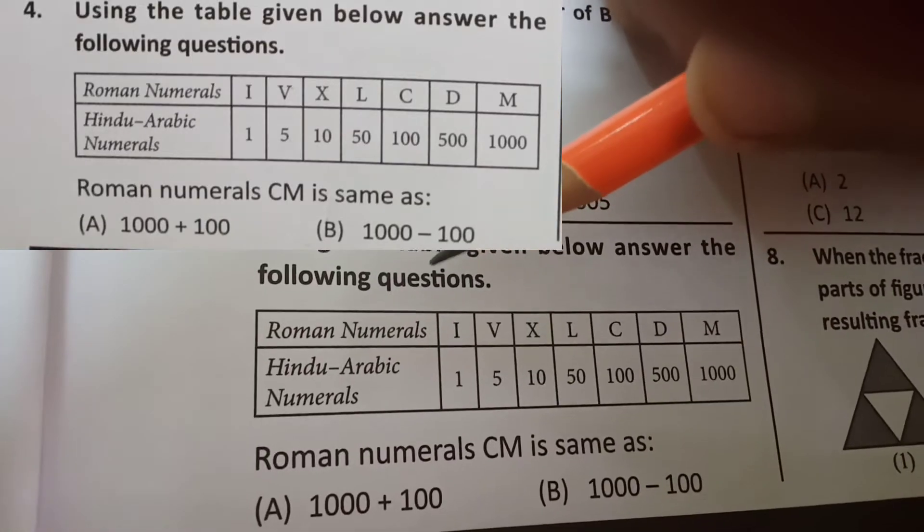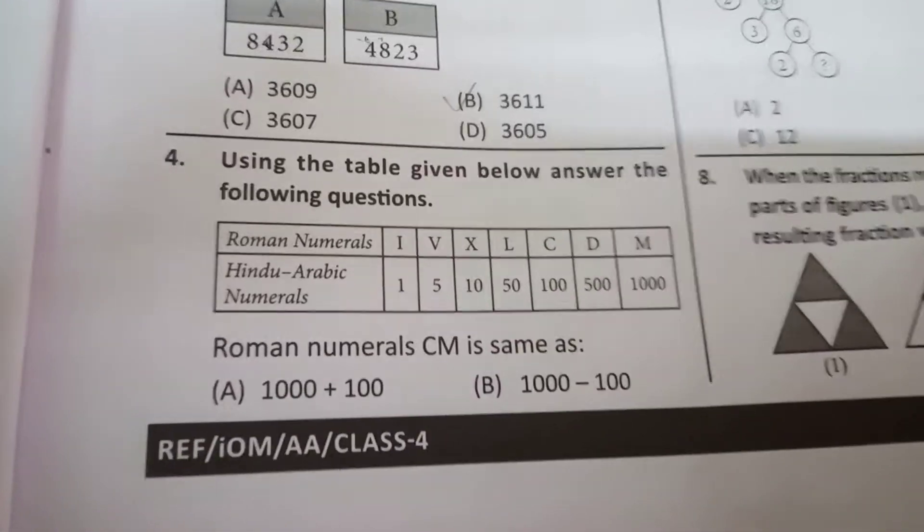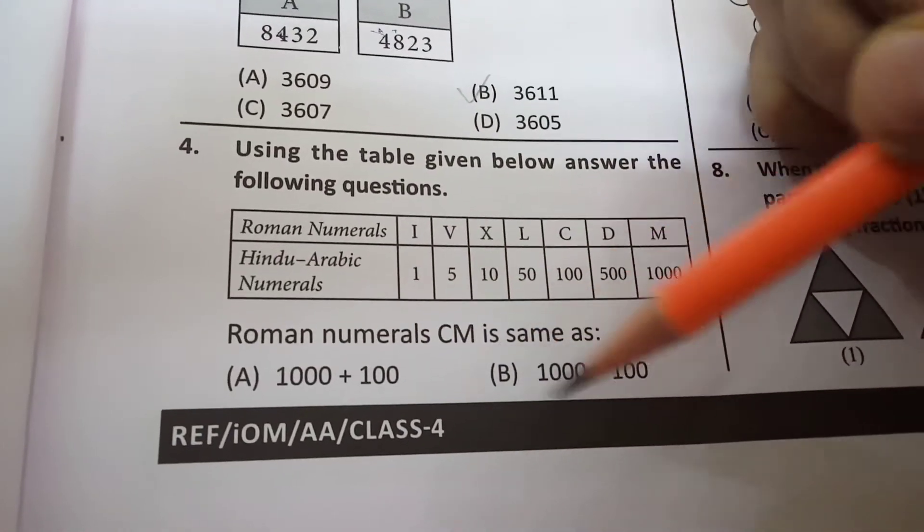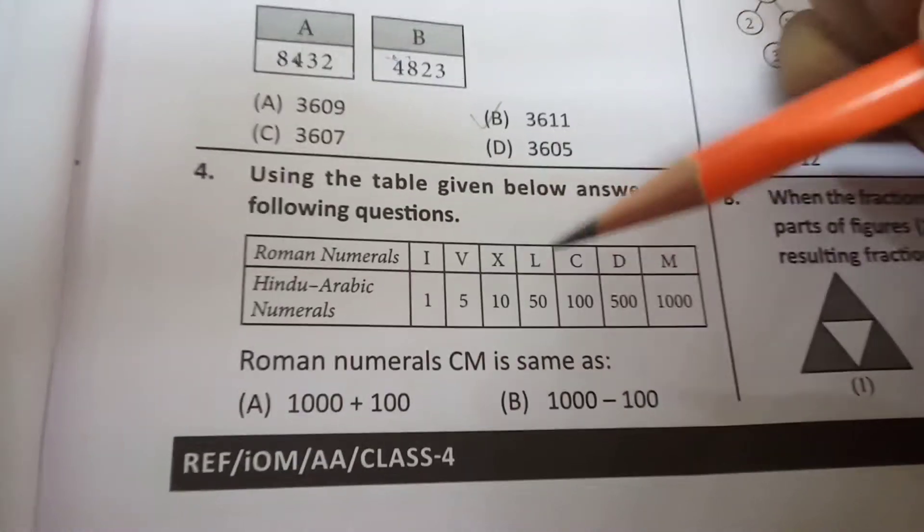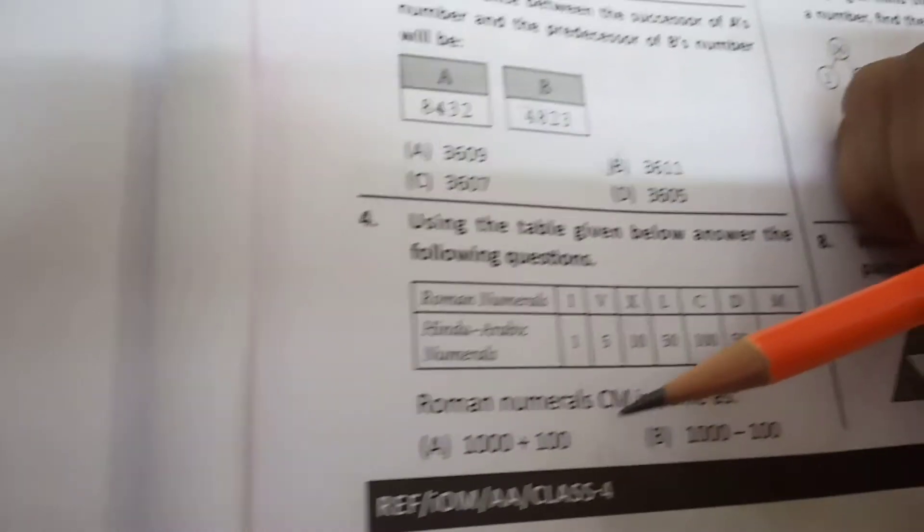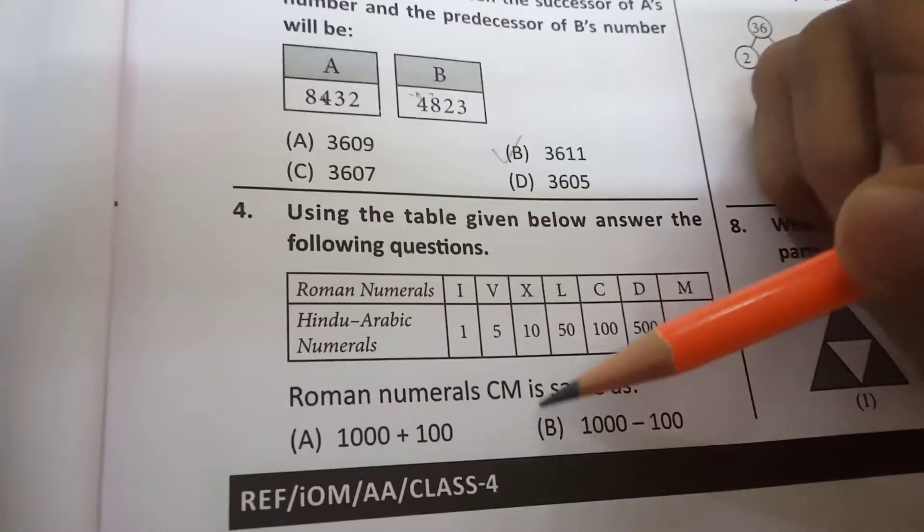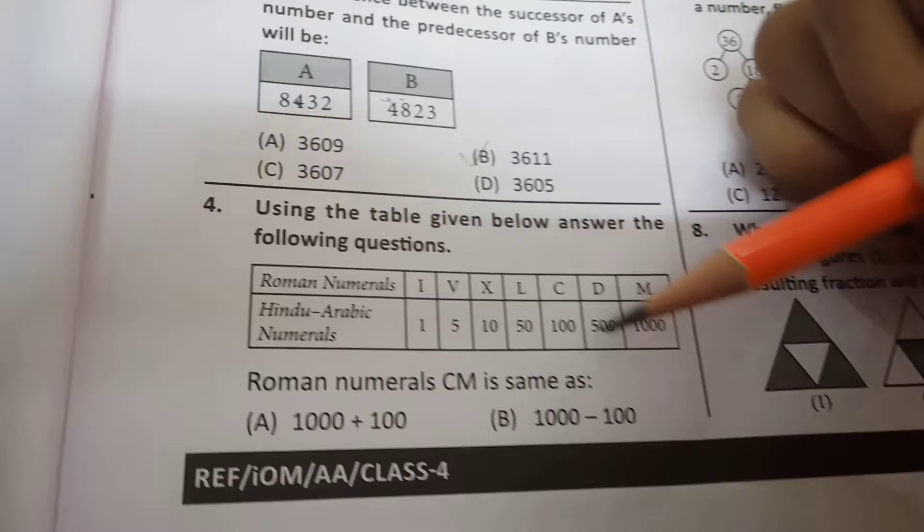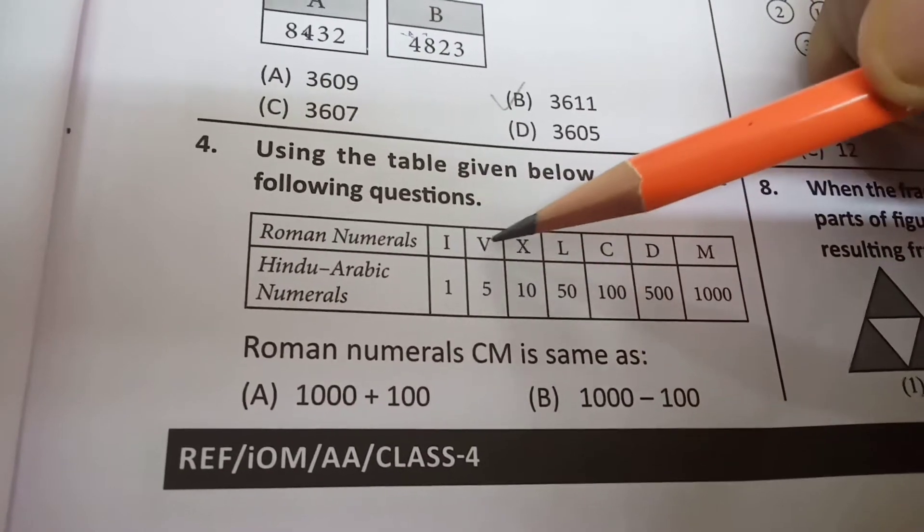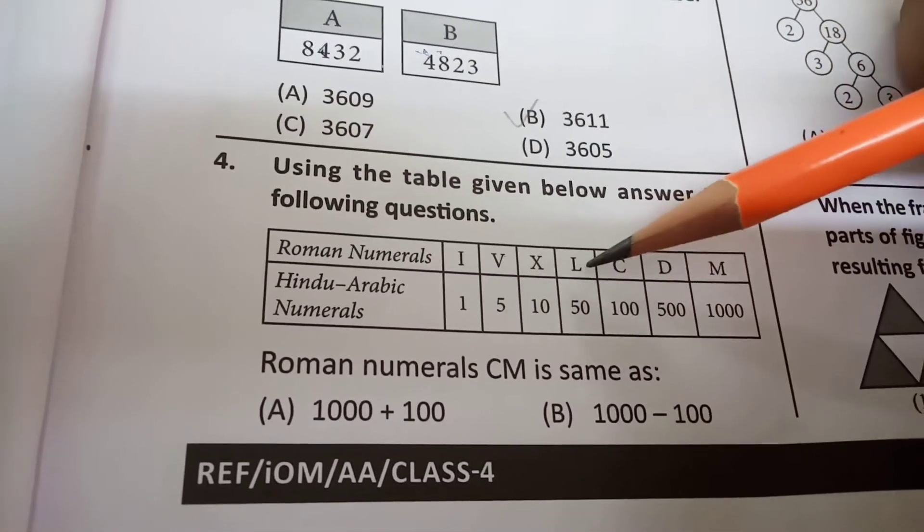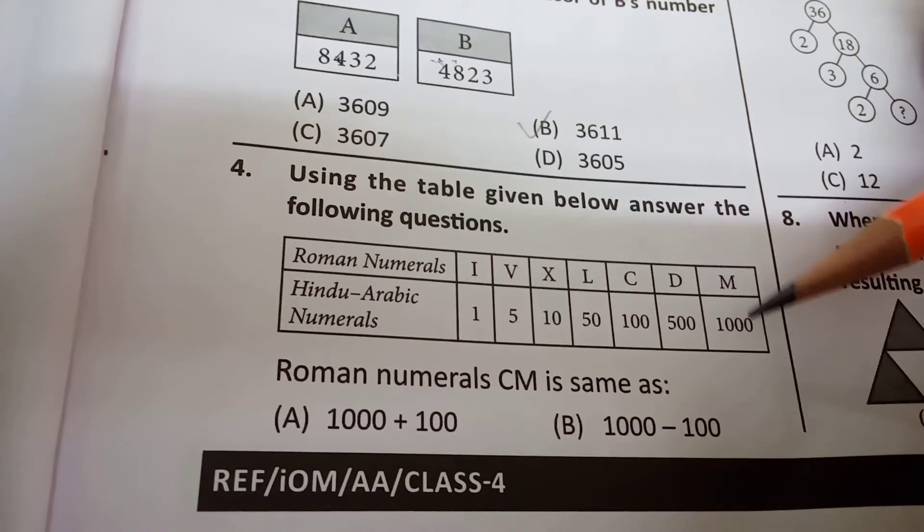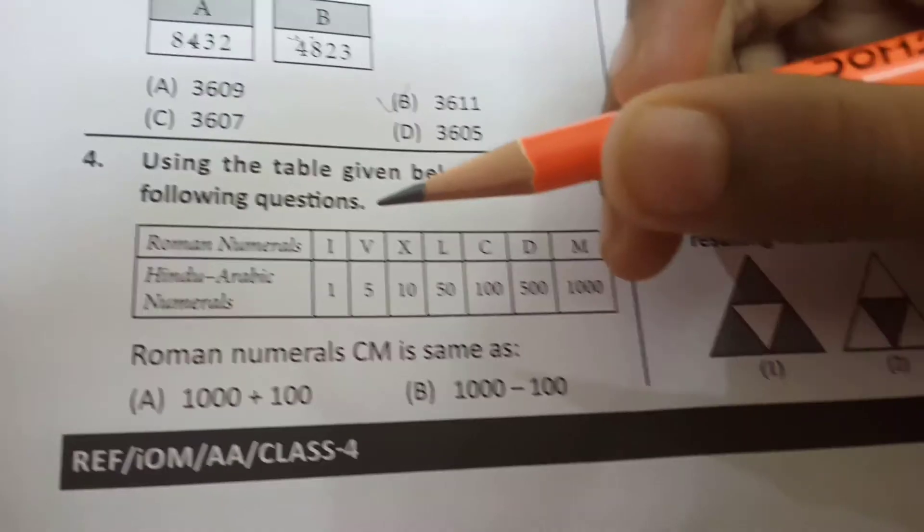So 3,611 will be the answer. Now look, next number is using the table given below answer the following questions. Here it is showing that we need to answer the questions using this table. So what is the question? Roman numerals M is same as. So here it is telling what does M mean. So first let's see the table. Roman numerals I means 1, V 5, X 10, L 50, C 100, D 500, M 1000.